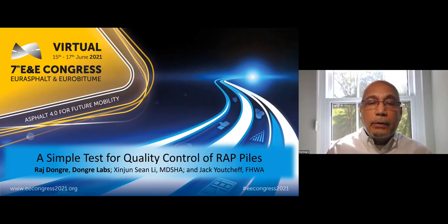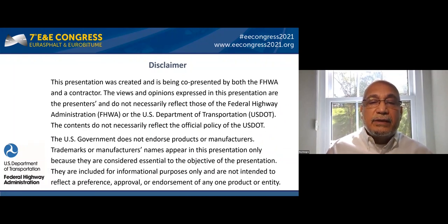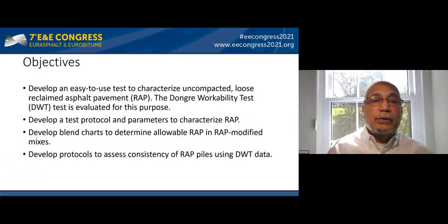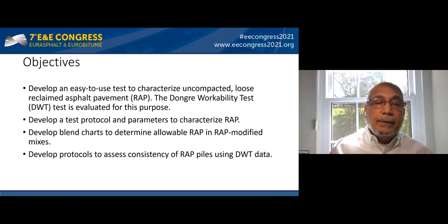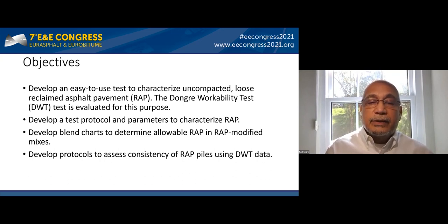Good afternoon. This is Raj Dongareh from the United States of America. My colleagues Sinjin Lee and Jack Uchef and I welcome you to our presentation: 'A Simple Test for Quality Control of RAP Piles.' The objectives of the study were to develop an easy-to-use test so that RAP in its loose uncompacted state can be characterized to determine the consistency of a RAP pile. The paper also includes other applications such as blend charts without extraction and mix design ideas using the Dwight test. We also developed protocols to assess consistency of the RAP pile.